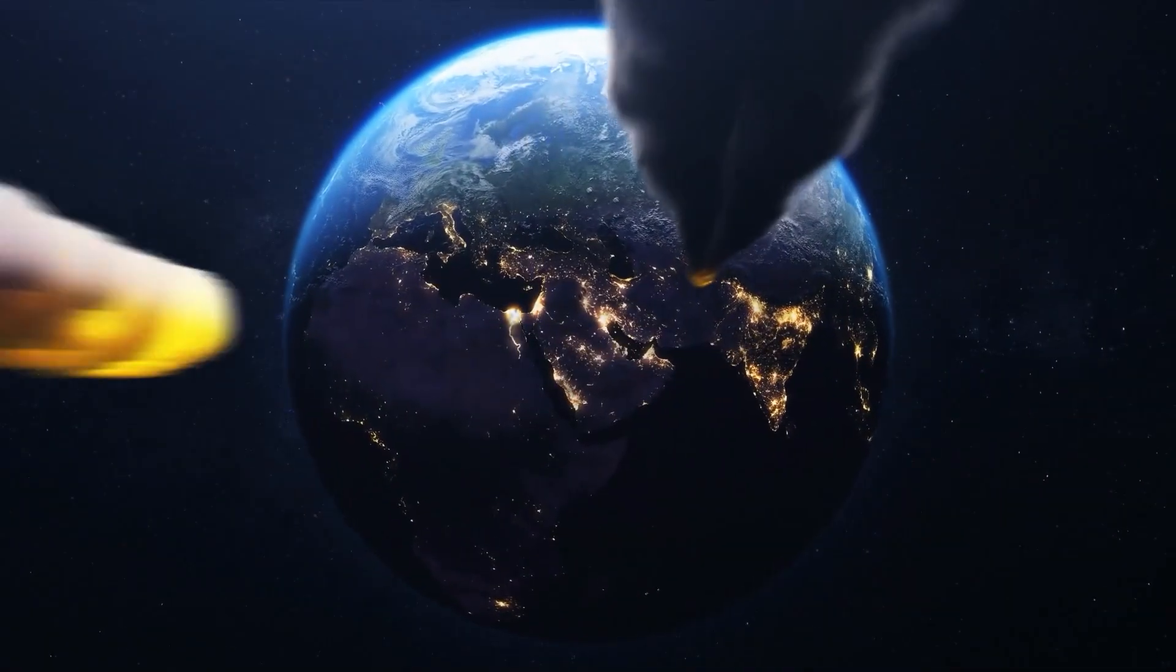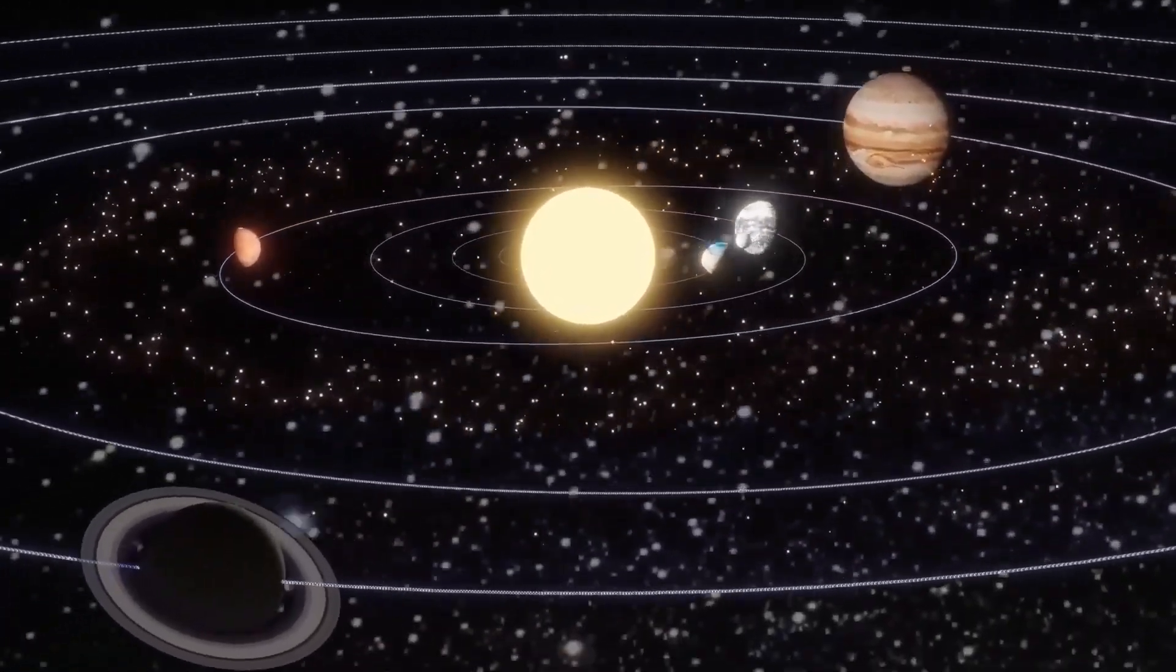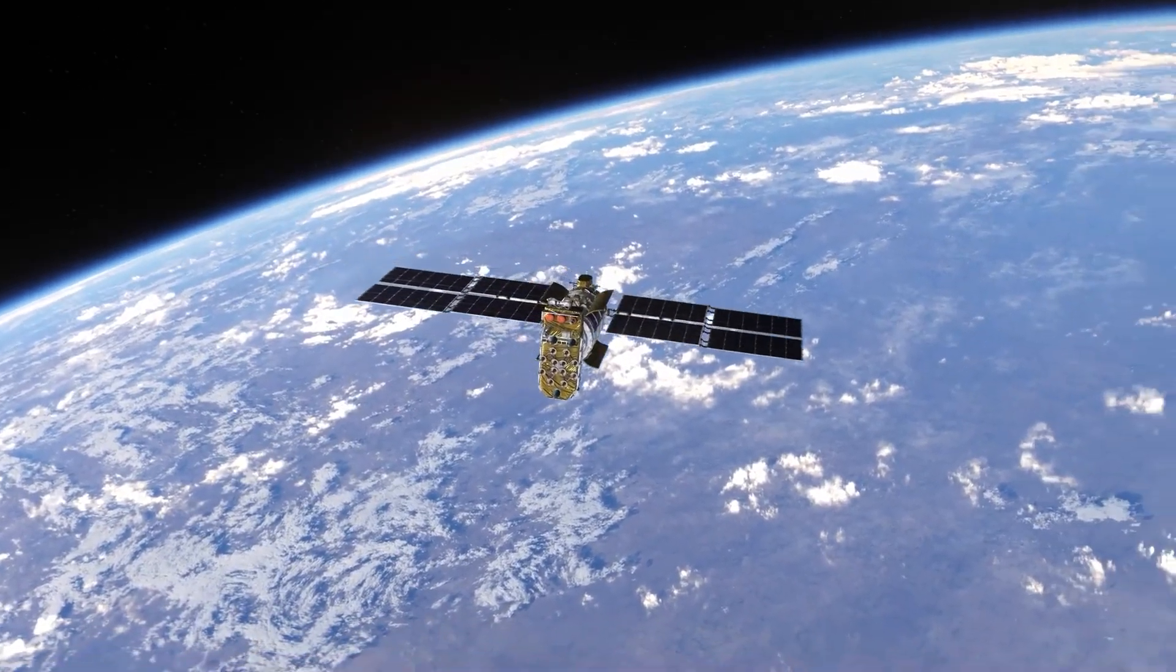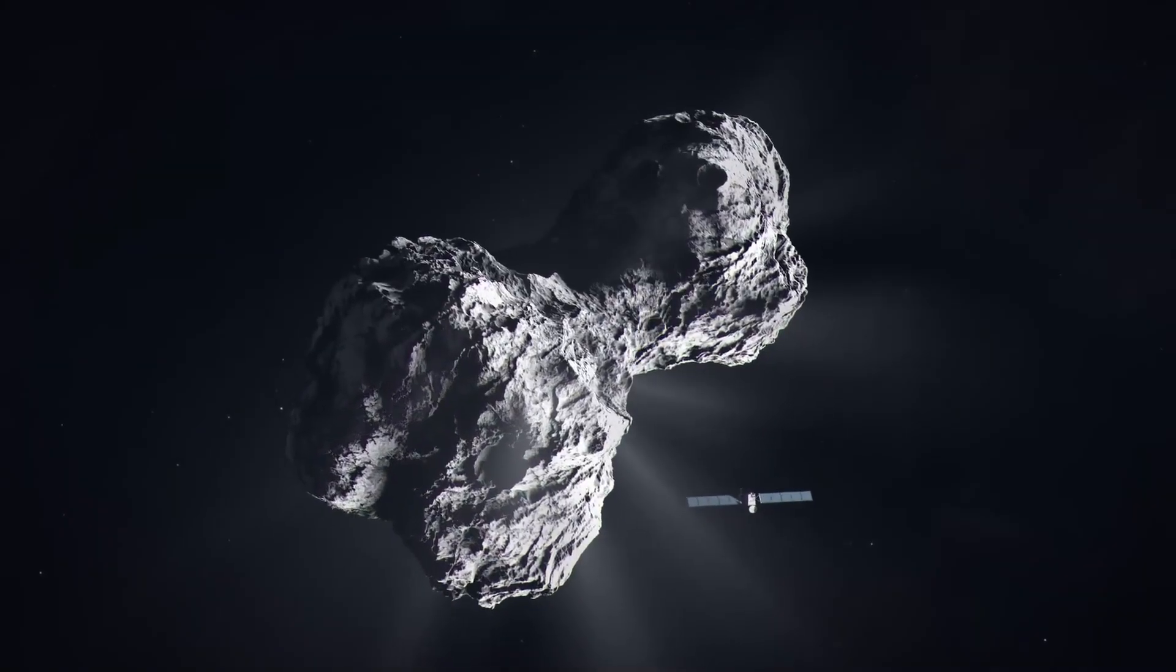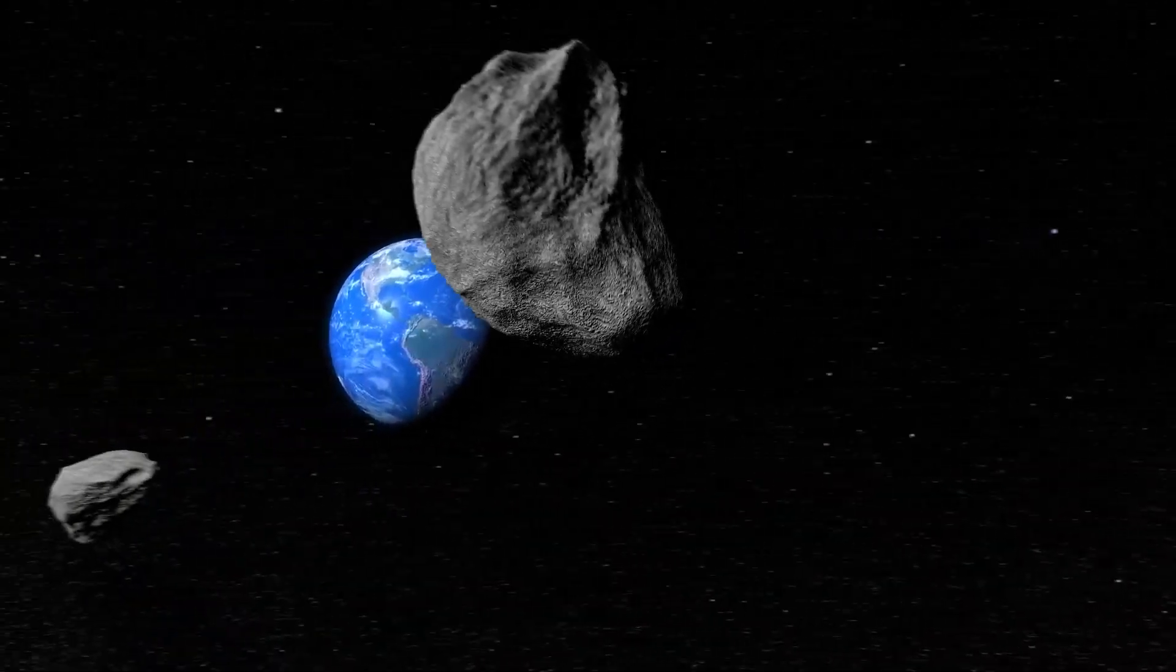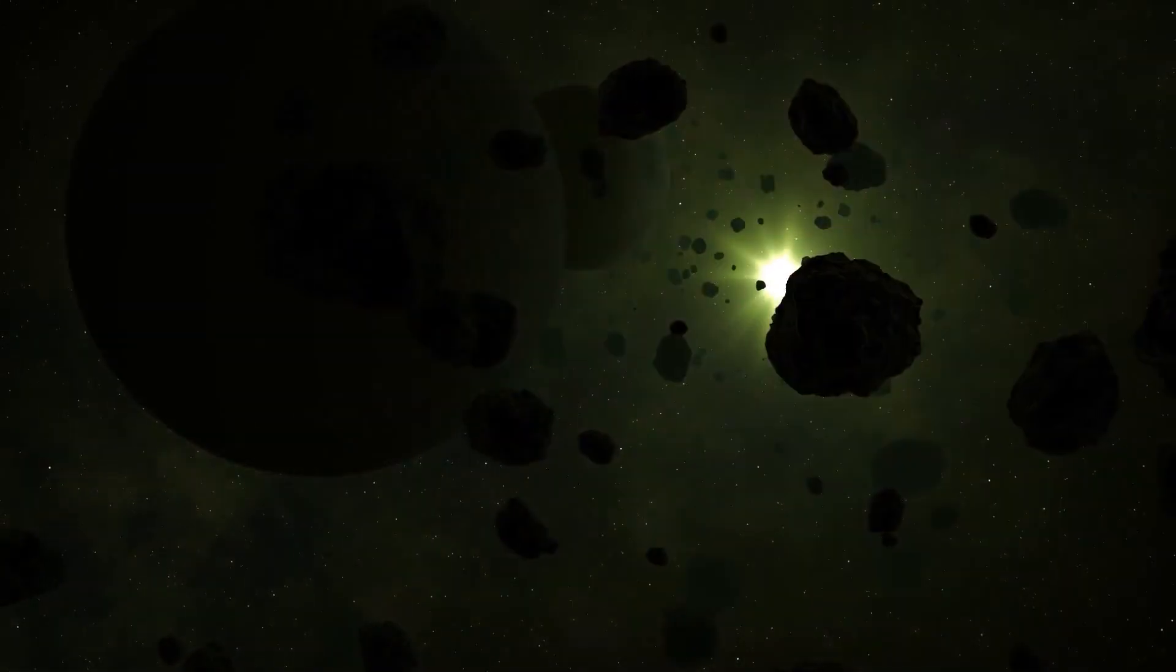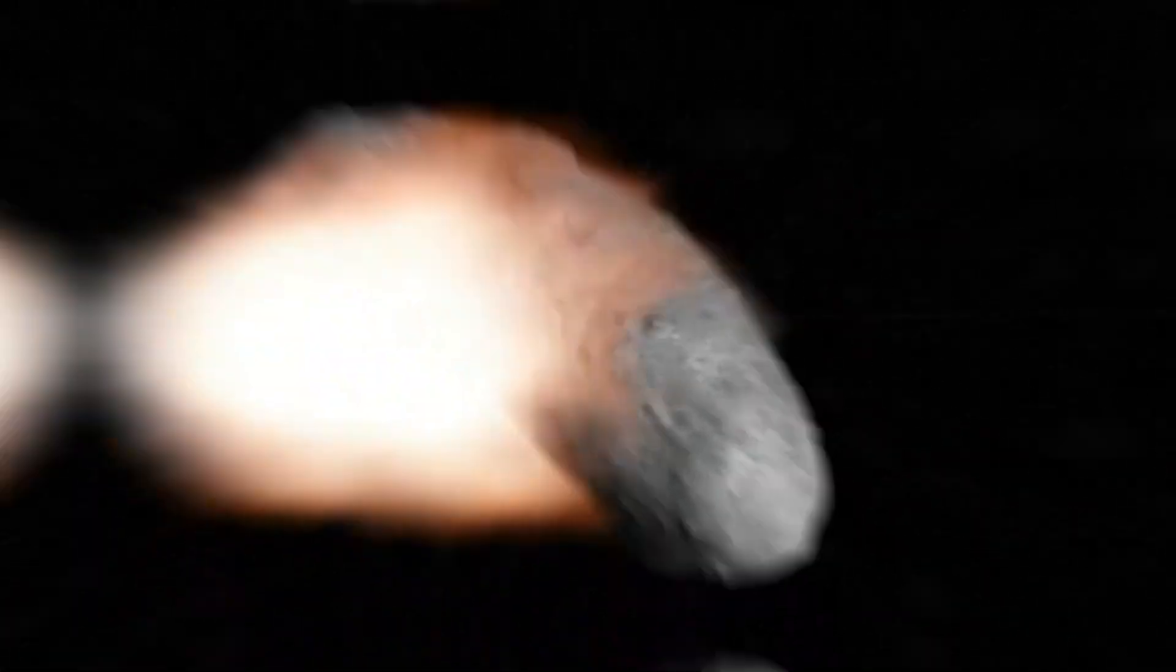This isn't about giant rocks hitting our planet, but smaller, faster bits that could turn our carefully built space infrastructure into a dangerous minefield. Our satellites, the very backbone of modern communication, navigation, and weather forecasting, would be at risk. We're talking about a potential Kessler Syndrome event, where one collision creates more debris, leading to even more collisions, crippling our orbital networks for years, perhaps decades. The most shocking fact is that protecting our technology from lunar ejecta is a brand-new challenge for planetary defense.